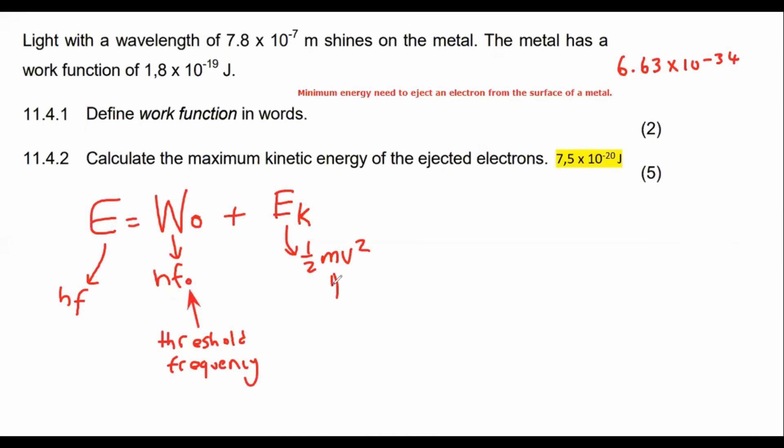This part over here, remember that this chapter is all about electrons, so that is the mass of an electron, which is a constant of 9.11 times 10 to the negative 31. And then this part here is the frequency of the light, whereas the threshold frequency is of the metal. So this part is the light, whereas this part is the metal.